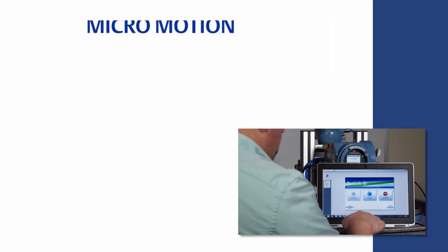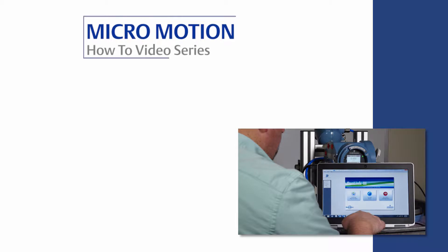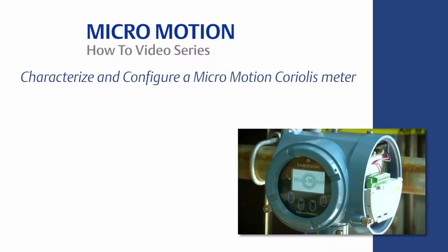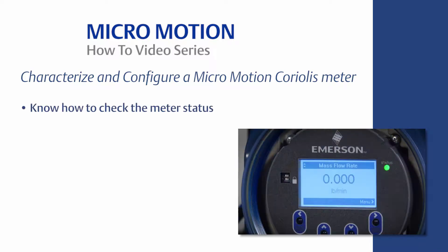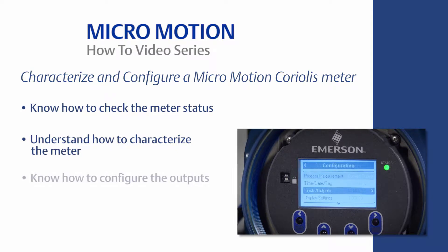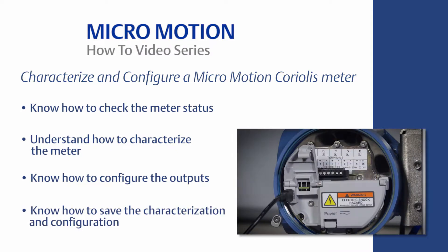Welcome to the Micromotion how-to video series. In this video we will cover how to characterize and configure a Micromotion Coriolis meter using the model 5700 transmitter display. The learning objectives are the following: know how to check the meter status, understand how to characterize the meter, know how to configure the outputs, and know how to save the characterization and configuration.